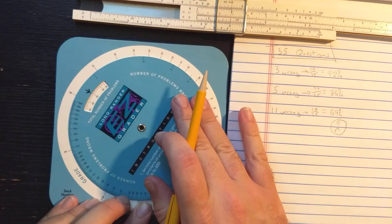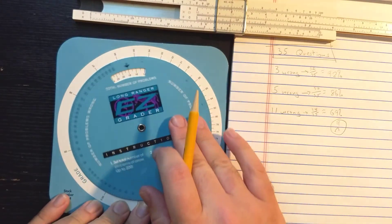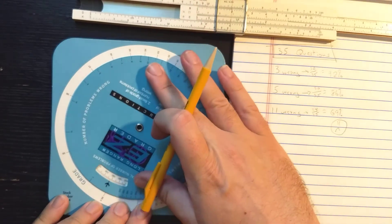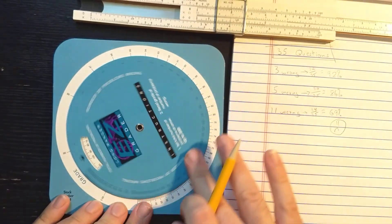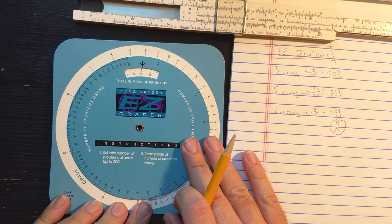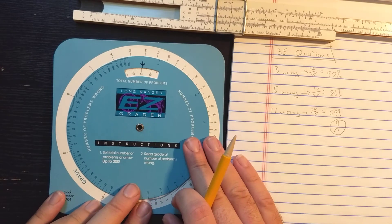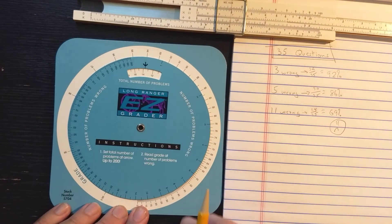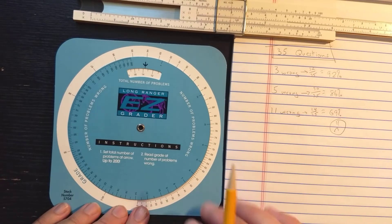You can do any number of problems up to 200, I think. Yeah, that scale maxes out at 200 there. And you can get any number wrong. So, this is the Long Ranger Easy Grader Special Purpose Slide Rule, still available.